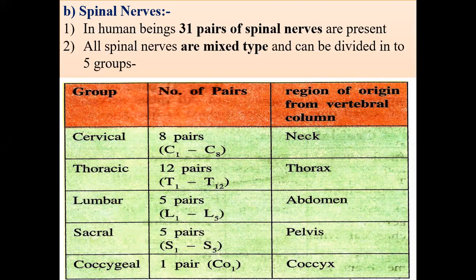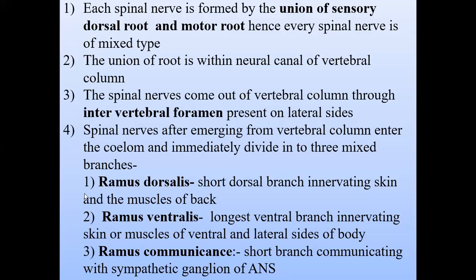Cervical: 8, thoracic: 12, lumbar: 5, sacral: 5, and coccygeal: 1 — representing the spinal nerves. Regarding the peripheral nervous system, cranial nerves are 12 pairs and spinal nerves are 31 pairs. Each spinal nerve is formed by the union of sensory dorsal root and motor ventral root, hence every spinal nerve is of mixed type. Cranial nerves may be sensory, motor, or mixed, but all spinal nerves are compulsorily mixed.